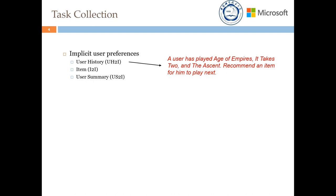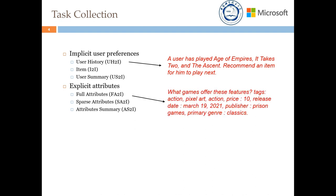The second group of tasks matches items based on the target item's explicit attributes. For example, a query of full attributes can be a concatenation of details of the item. The third group of tasks aims to enhance fuzzy queries — for example, name misspell aims to simulate instances of typos.